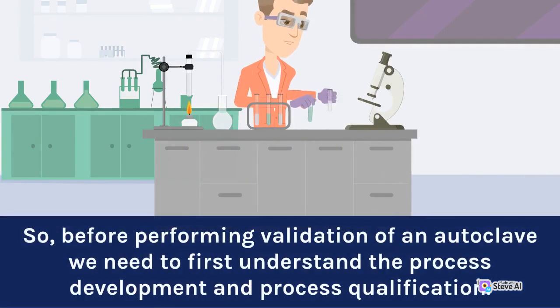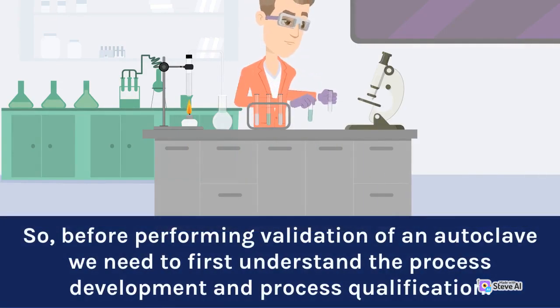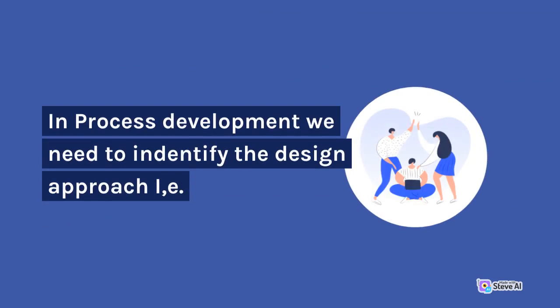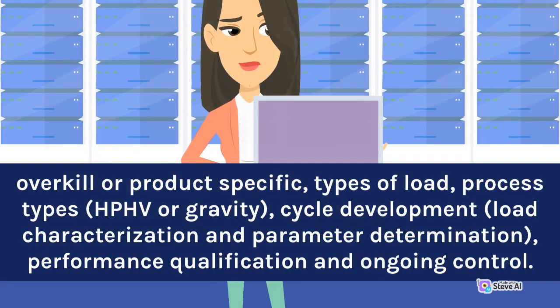Before performing validation of an autoclave, we need to first understand the process development and process qualification. In process development we need to identify the design approach, i.e. overkill or product specific, types of load, process types — HPHV or gravity — cycle development, load characterization and parameter determination, performance qualification and ongoing control.